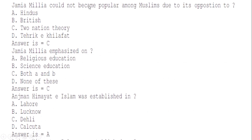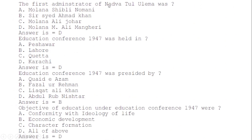Jamia Millia could not become popular among Muslims due to its opposition to: correct option C. Jamia Millia emphasized: correct option C — both A and B, meaning religious education and scientific education. Anjuman Hidayat Islam was established in: correct option A — Lahore.